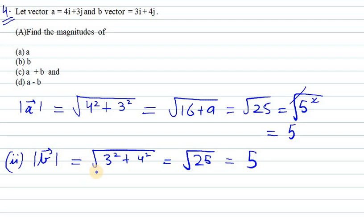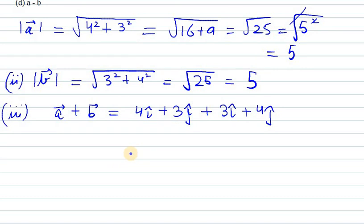Now the next is a vector plus b vector and we need to find the magnitude of it. So first of all add a and b vector. So a and b vector can be written as 4i plus 3j cap plus 3i cap plus 4j cap. Now we can add the i once and j cap. So 7i cap plus 7j cap.